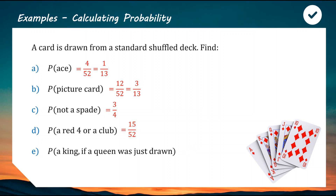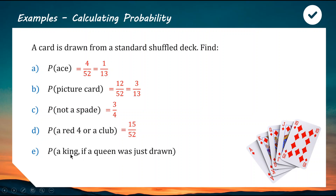For the probability of a king given that a queen was just drawn: this involves multi-stage events. If you drew a queen from a 52-card deck, there are now 51 cards remaining. Of those 51, there is a king in every suit — king of hearts, diamonds, spades, and clubs — so there are four kings. The probability is therefore four out of 51, not out of 52, because one card has already been removed.